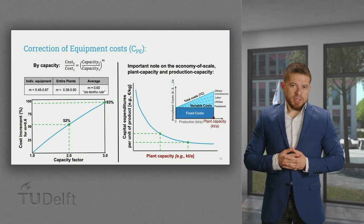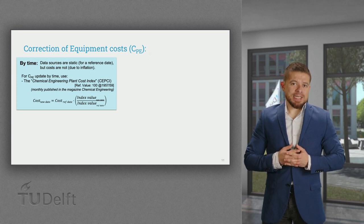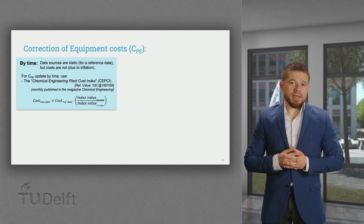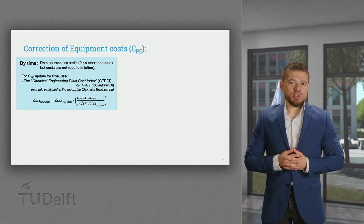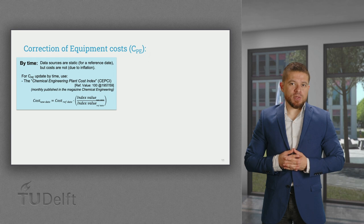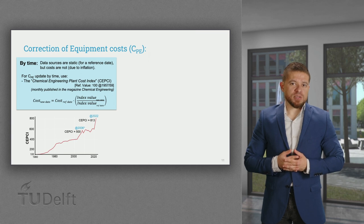Another important aspect when retrieving information on equipment costs from multiple sources is that data would most likely refer to different years. For a consistent economic evaluation, we should update this data to the same time point. To do so, we can use the Chemical Engineering Plant Cost Index, which is regularly updated and describes how the purchase costs have changed over time.